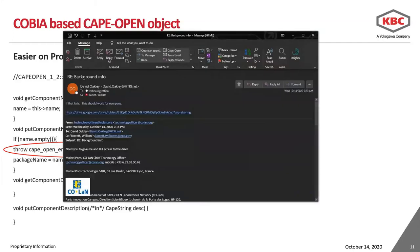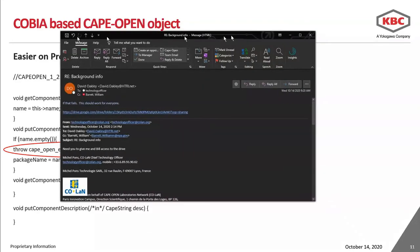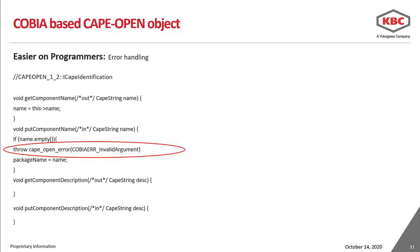Error handling is much easier in COBIA than COM. As shown here, if your package name is empty, for example, it simply throws an exception which is defined in the COBIA header. The CAPE identification adapter then catches the C++ specific exception and translates it into a valid CAPE-OPEN error. Everything in the C++ binding of COBIA is a smart pointer to an interface, and all of that is defined or included via the COBIA header.